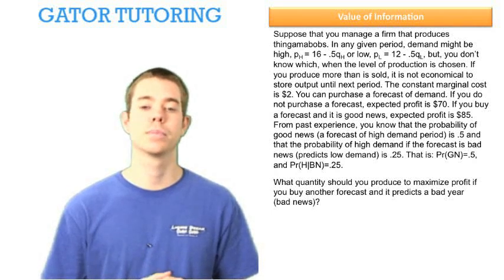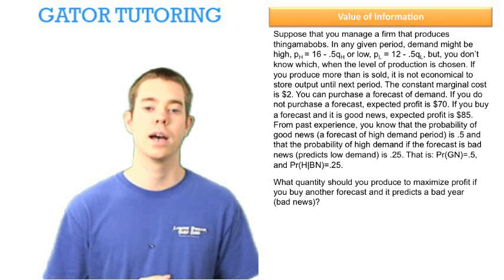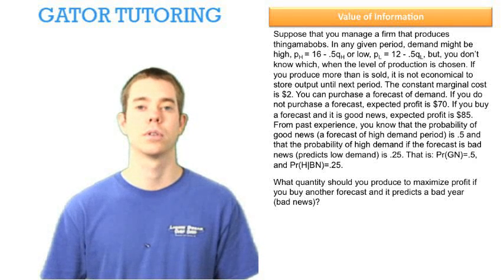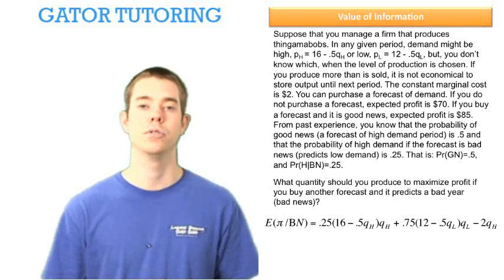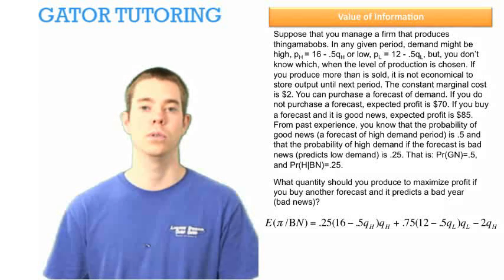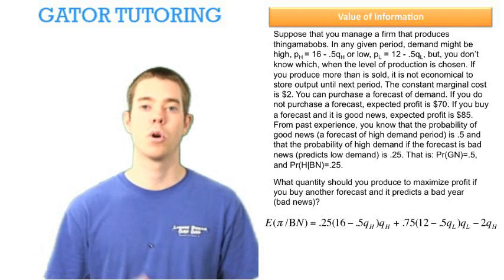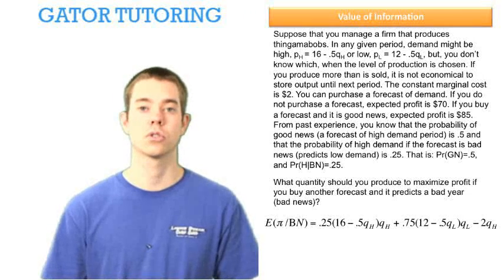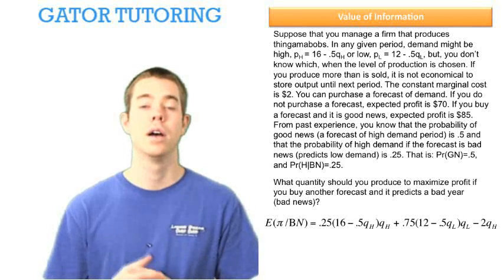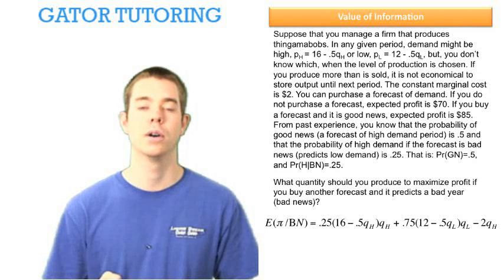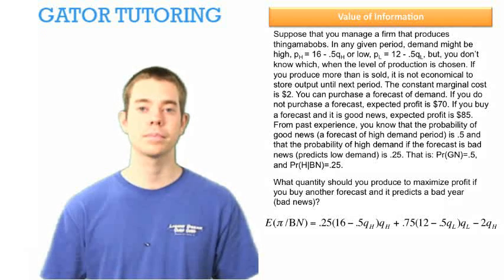The question asks: what quantity should you produce to maximize profit if you buy a forecast and it predicts a bad year? To find the quantity given bad news, we start from the expected profit given bad news formula: 25% times total revenue in high demand, plus 75% times total revenue in low demand, minus marginal cost associated with quantity in a high period. This is subject to the constraint that QH must be greater than QL.